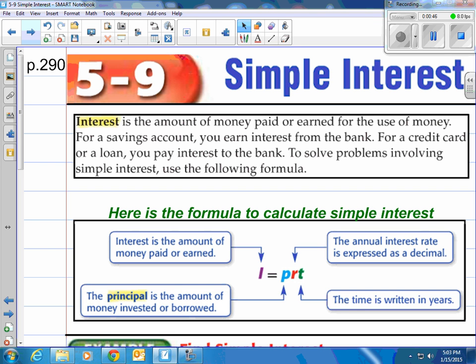In the box down here it says, here's the formula for calculating the simple interest. The equation is I equals PRT, which means P times R times T. I is the interest, the amount of money paid or earned. P is the principal, the amount of money invested or borrowed. R is the annual interest rate, expressed as a decimal. And T is time, written in years. Many times they'll give it to you in months. You'll have to change that to years. That's the one big thing you want to remember.